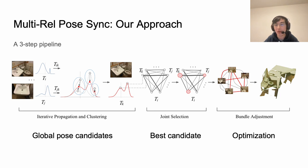In order to handle these challenges we propose multiple relative pose synchronization, which is a three-step pipeline that solves the synchronization problem under the setting that multiple estimations exist on each pair. The first is an iterated propagation and clustering step which finds the global pose candidates along paths in the graph.